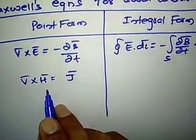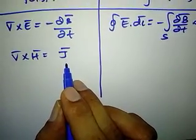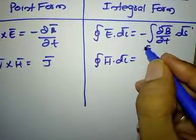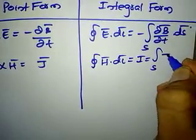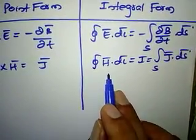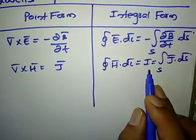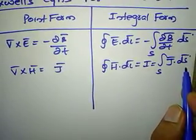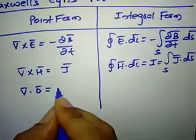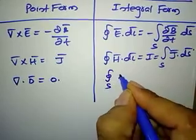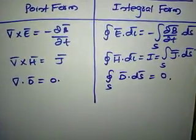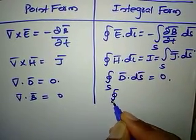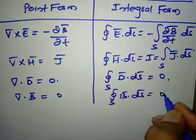For a good conductor, the second equation is: curl H-bar = J-bar, that is the curl of magnetic field intensity equals the current density. In integral form: closed surface integral of H-bar · dL-bar = I = surface integral of J-bar · ds-bar. The third equation: del · D-bar = 0, and surface integral of D-bar · ds-bar = 0. The fourth: del · B-bar = 0, and closed surface integral of B-bar · ds-bar = 0.